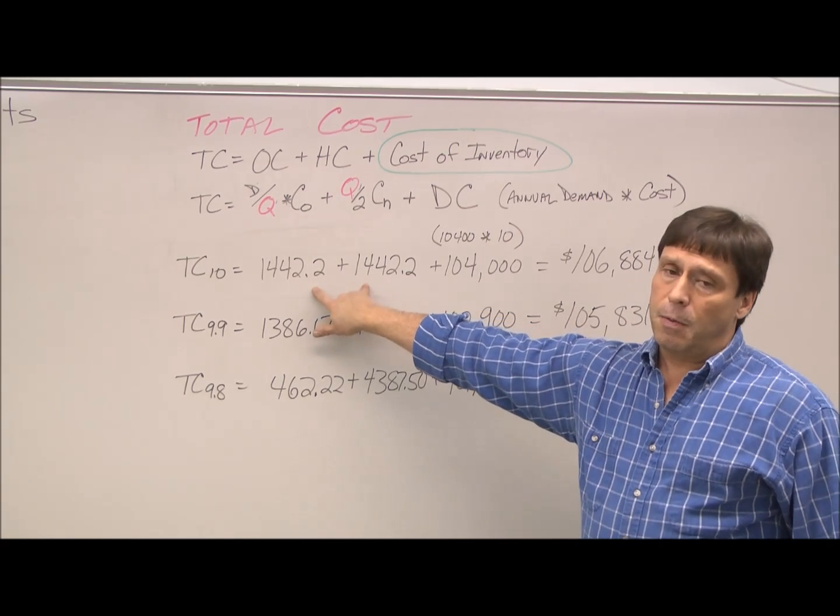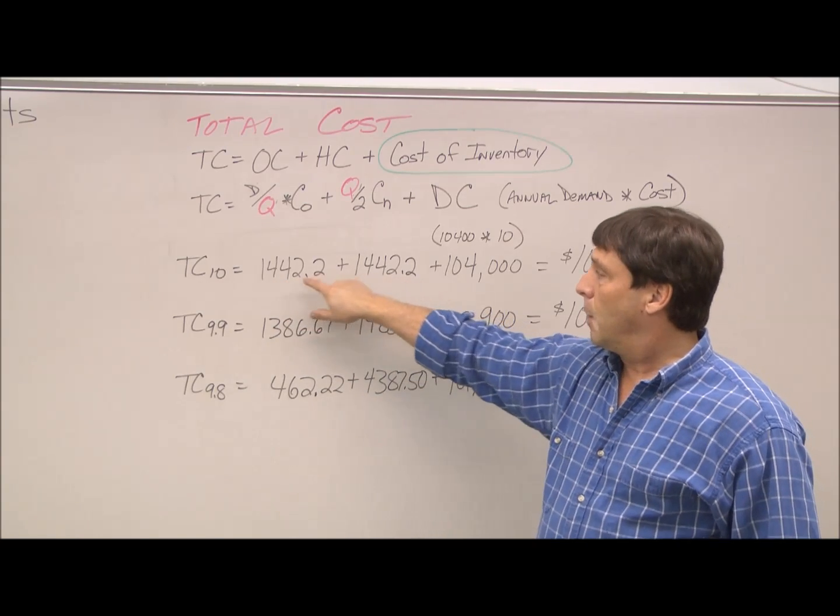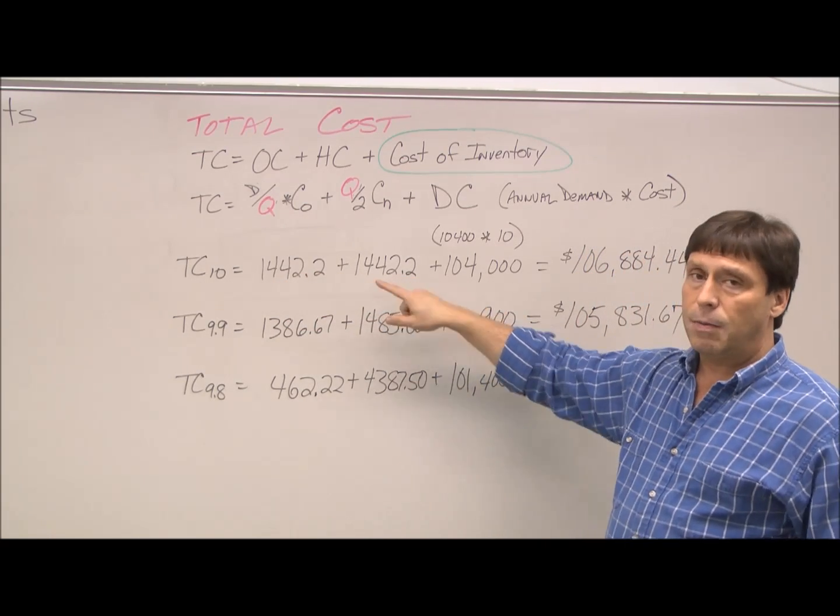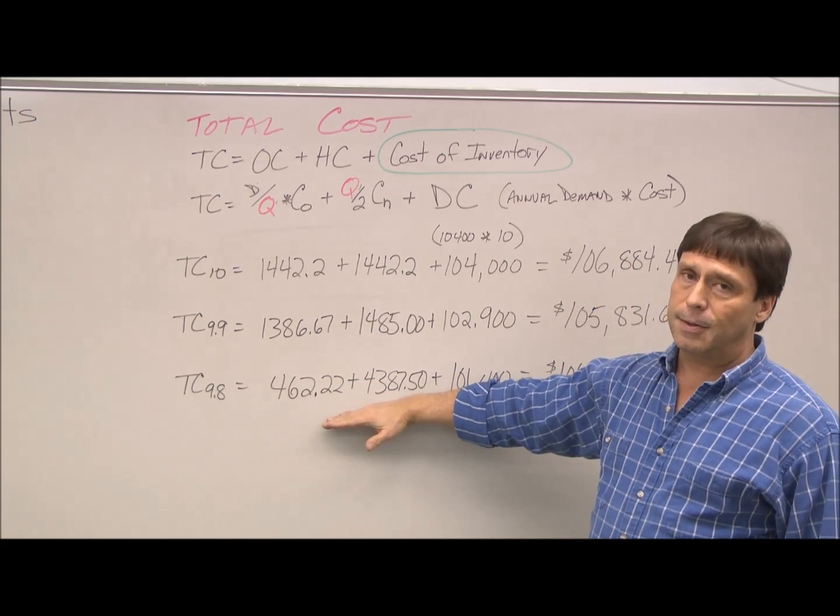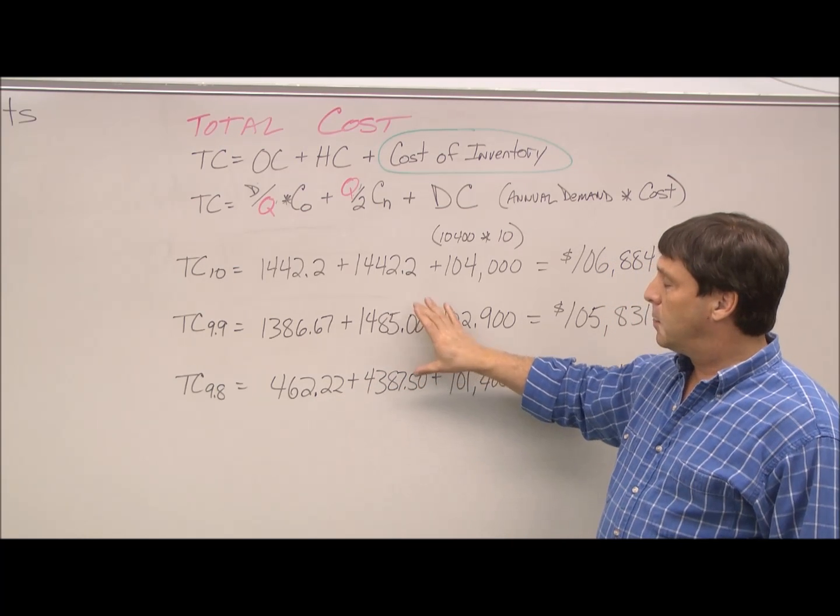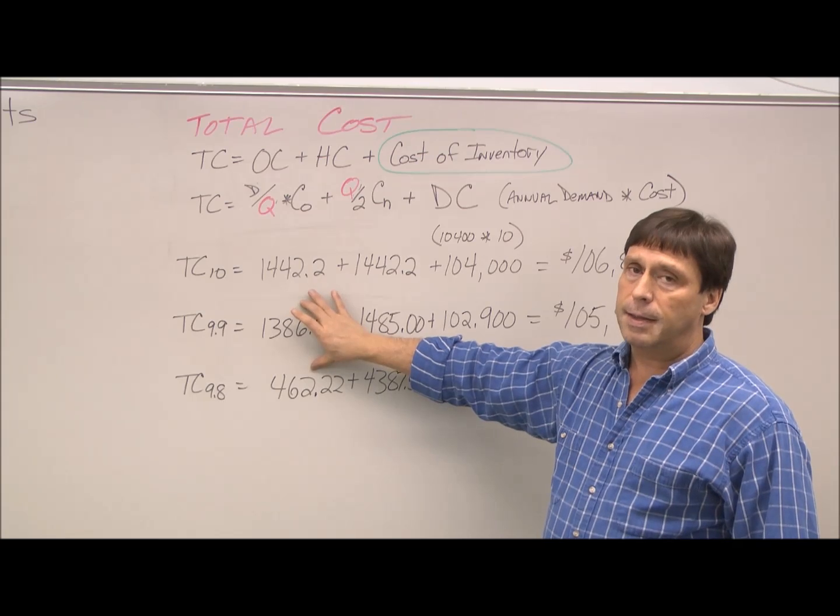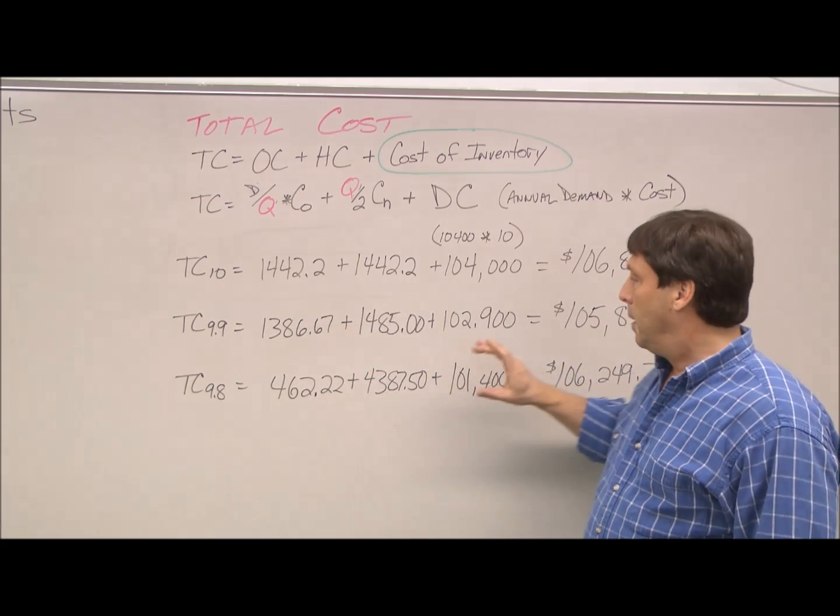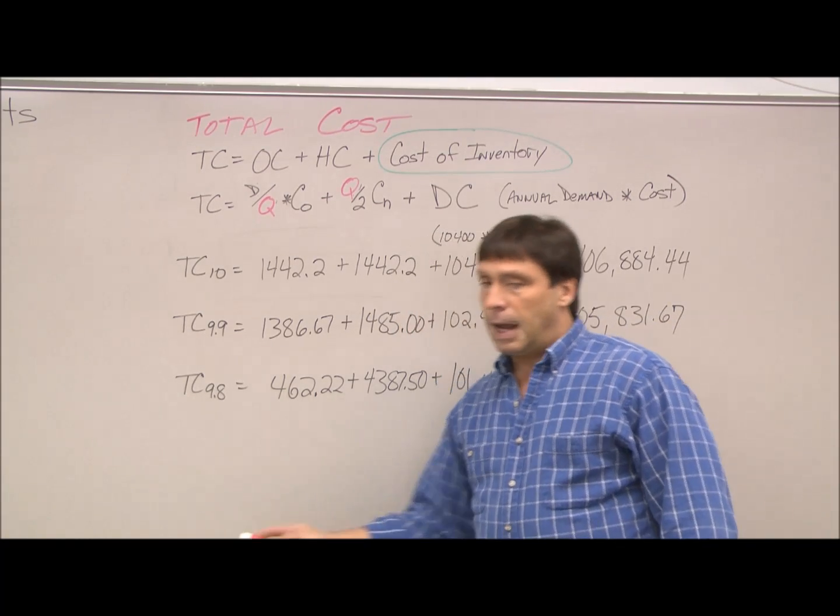You notice in the first one, where we use the EOQ, just as we'd expect, our ordering cost and holding cost are equal, because we have the equilibrium. But what happens at these next two costs? They get distorted, because we're holding more inventory and we're ordering less. We're not at the equilibrium point, but because our cost is less, we're willing to offset it a little bit.